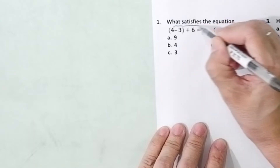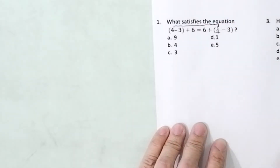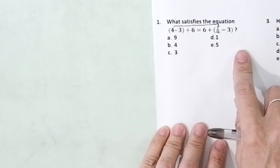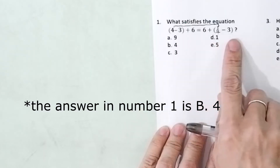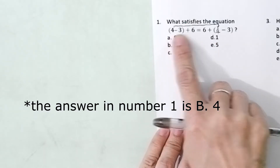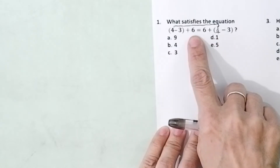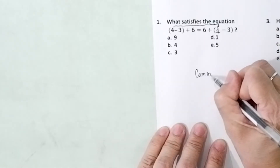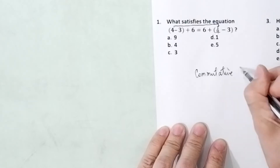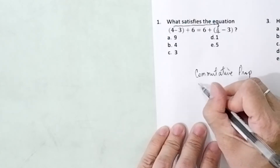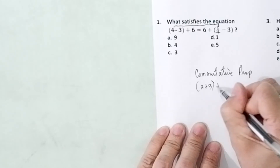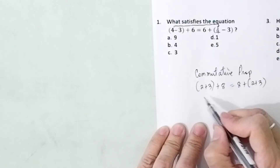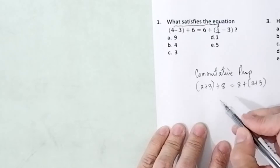Obviously, you will have 4 here. Now, there are other problems which will ask you what property is being illustrated. Look at this: 4 minus 3 is here, it went there, and the 6, which is on the second position, became the first position. What property is that? Commutative property. So if it is 2 plus 3 plus 8 becoming 8 plus 2 plus 3, that is commutative property, because only the position or order changes.